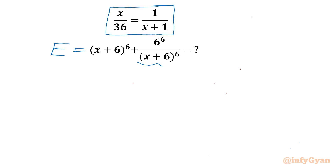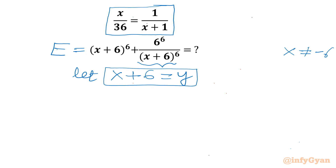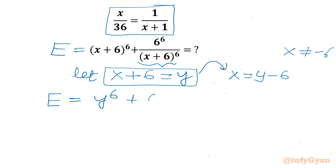From our denominator, x cannot be equal to minus 6. Now I will use substitution: let x plus 6 equal y. So from this equation I can write x will be equal to y minus 6. So the expression we are going to evaluate in terms of y is y^6 plus 6^6 over y^6. Now since x cannot be equal to minus 6, we can write y cannot be equal to 0 also.